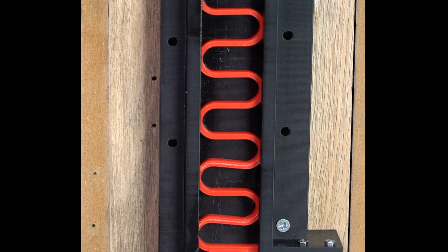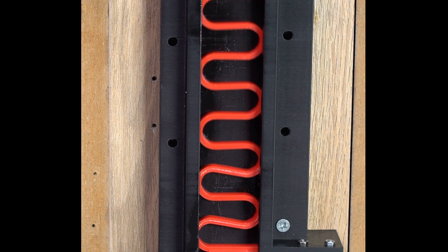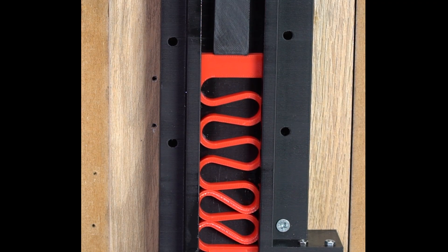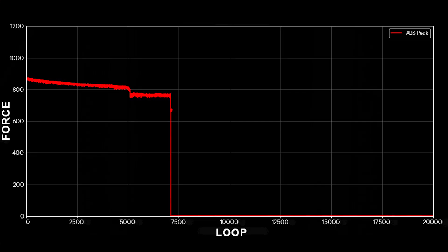It started with 840 kilograms. At loop 5,100, it cracked. And at loop 7,029, it died. The result? It lost 11% of its power. It didn't get too tired, but it gave up way too early.